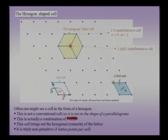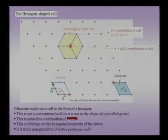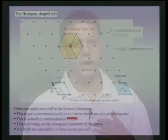Since the original cell was primitive and this cell is three times larger in area, it is not surprising that this is a triply non-primitive hexagonal cell. This is not the conventional cell we use, and the reason is obvious: the conventional cell must be a parallelogram in two dimensions (and a parallelepiped in three). Since this hexagonal cell is not a parallelogram, it is not the typical unit cell for describing a hexagonal lattice.